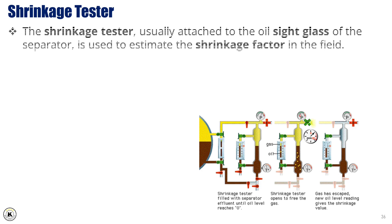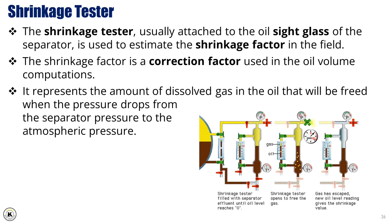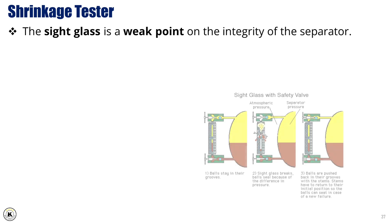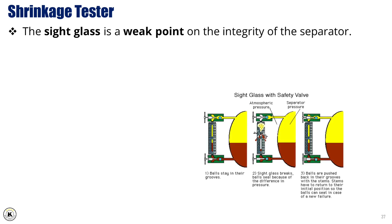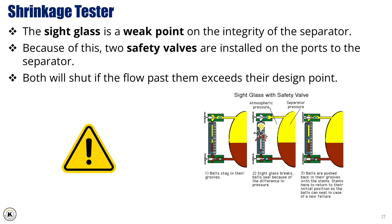The shrinkage tester, usually attached to the oil sight glass of the separator, is used to estimate the shrinkage factor in the field. The shrinkage factor is a correction factor used in oil volume computations; it represents the amount of dissolved gas in the oil that will be freed when the pressure drops from the separator pressure to atmospheric pressure. The sight glass is a weak point on the integrity of the separator, so two safety valves are installed on the ports to the separator; both will shut if the flow past them exceeds their design point.